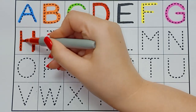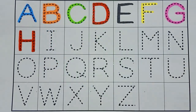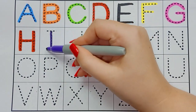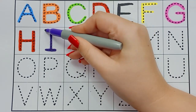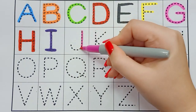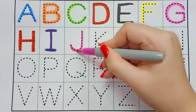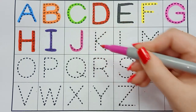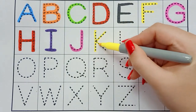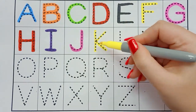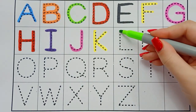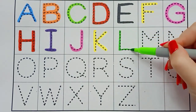A, B, C, D, E, F, G, H, I, J, K, L, M, N, O, P, Q, R, S, T, U, V, W, X, Y, and Z. Now I know my ABCs, next time won't you sing with me?